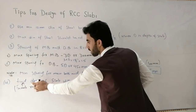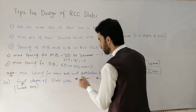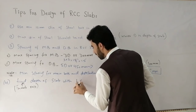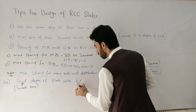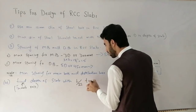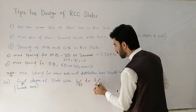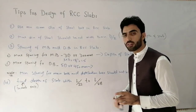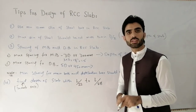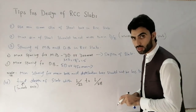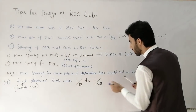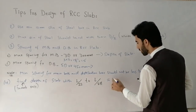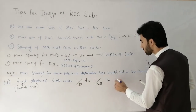The thumb rule formula to find the depth of an RCC slab is L divided by 22 to L divided by 28, where L is the length of the slab. This gives you the depth of the slab by thumb rule.